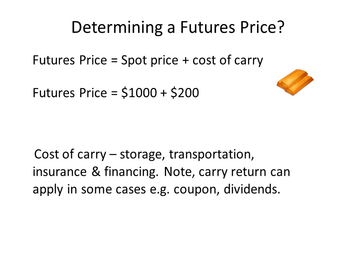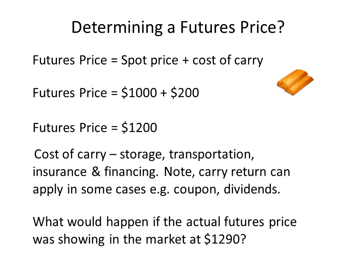Let's suppose that the spot price is $1,000 and we've worked out the associated costs of carry for gold. That gives us a futures price of $1,200. The $1,200 is referred to as the theoretical futures price or the fair futures price. Now suppose we observe the actual futures market price and see that the one-year futures price is actually trading at $1,290. Is it possible to conceive of a way to make a risk-free profit from this perceived anomaly? We have the actual futures price at $1,290, the theoretical futures price at $1,200, the spot price at $1,000, and associated carry costs of $200.